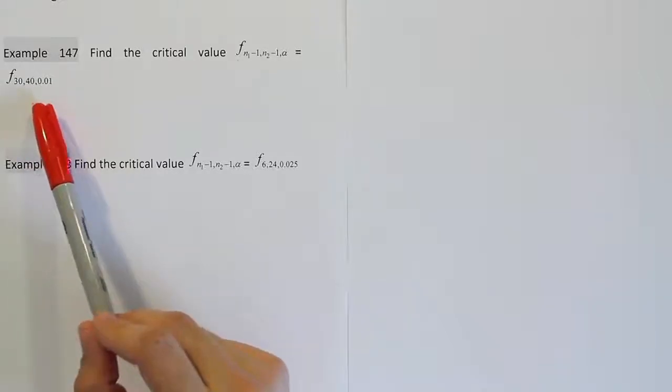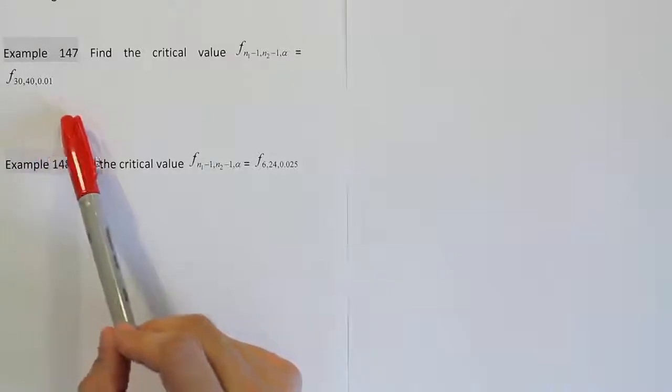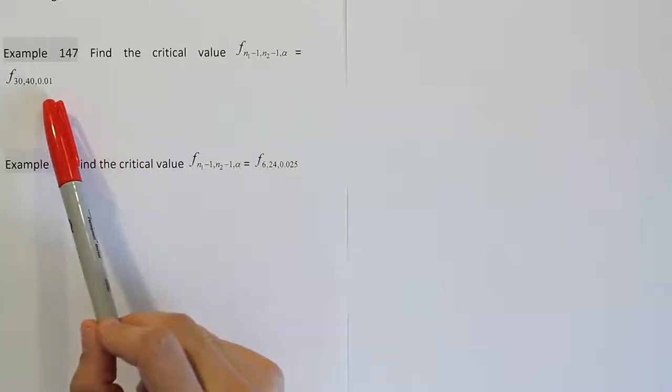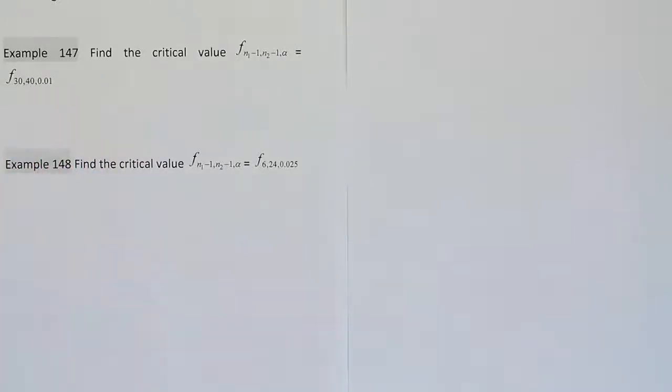But here we're going to the table now, we're just going to look up these numbers. The thing that's also unique about the F table is it's not one table, it's tables plural. So for every significance level we have a different table. For example, for this first one we're going to be going to the 0.01 table.